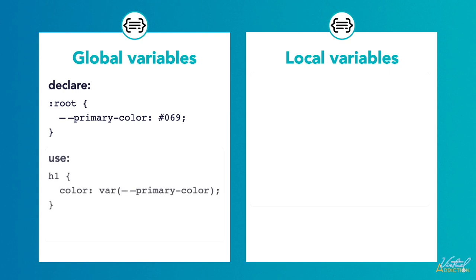As you can see down here, I'm using it by specifying the `color` property and then using `var()`, passing in the name of the variable inside the parentheses.